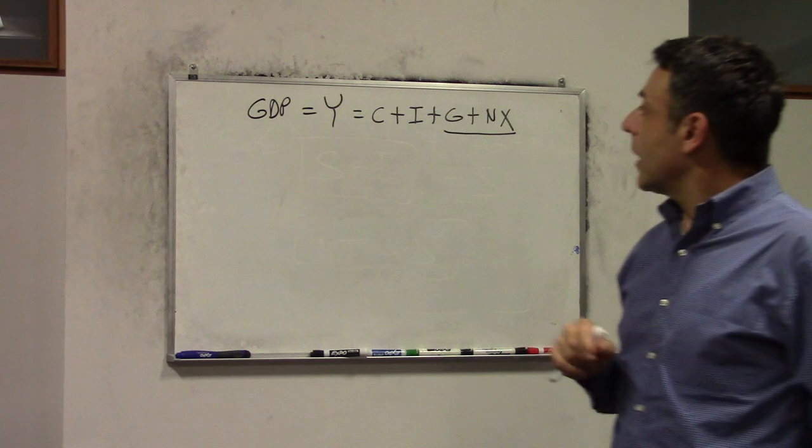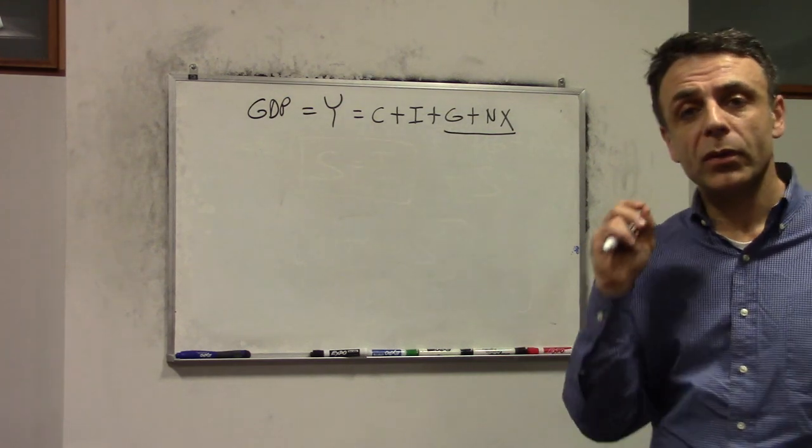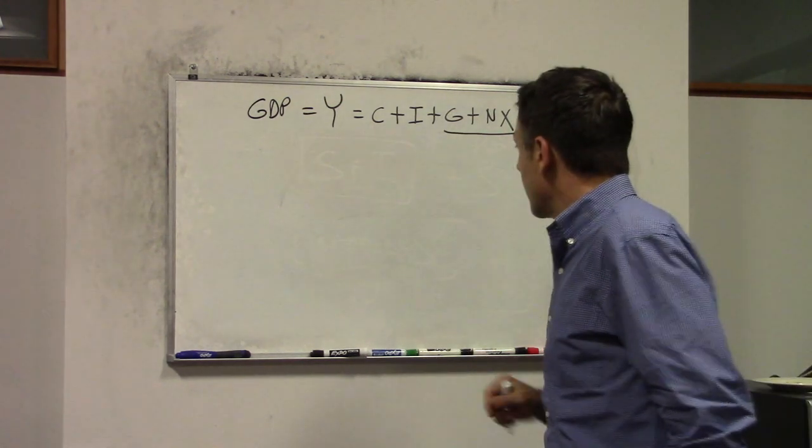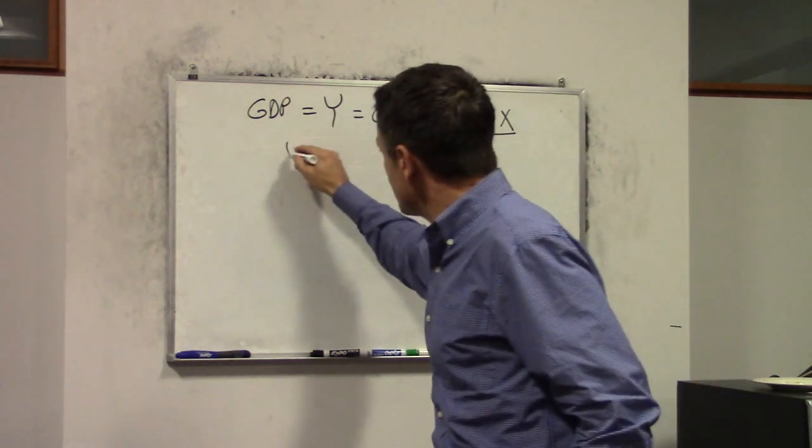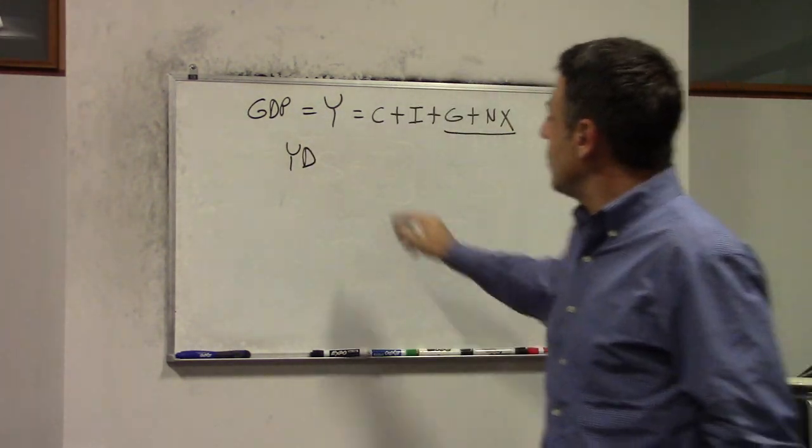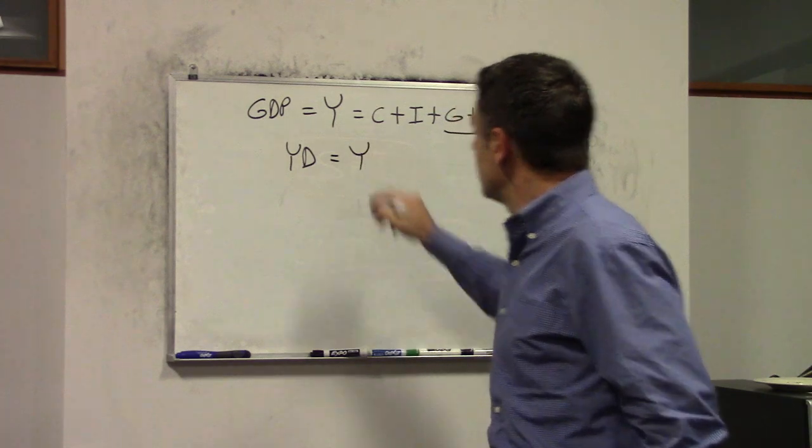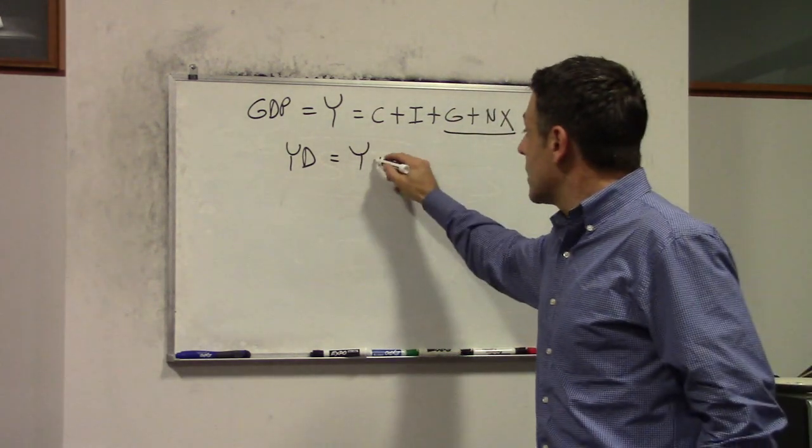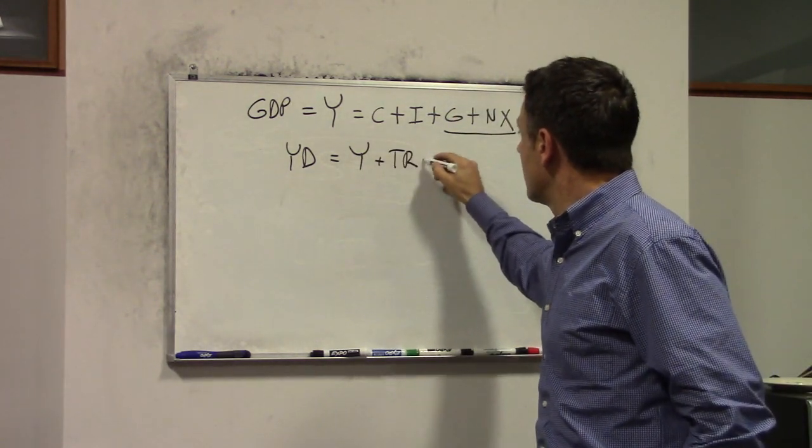The main question in this case is what is disposable income? Now we do have the government, so disposable income must be different from what we said last time. Disposable income must be equal to income plus transfers minus taxes.